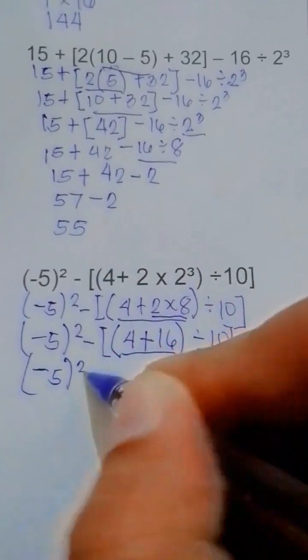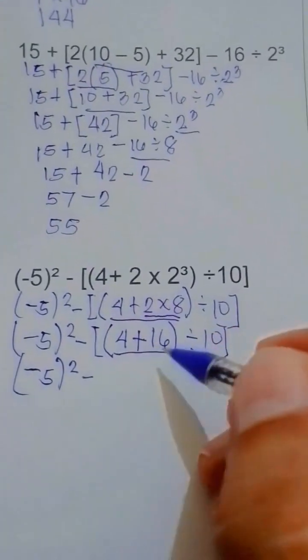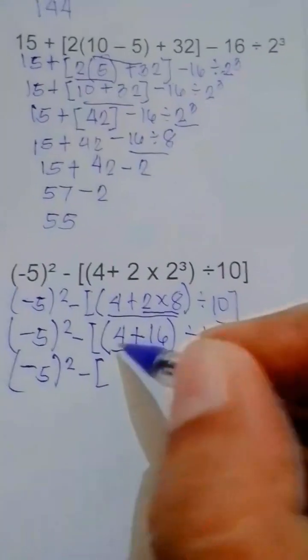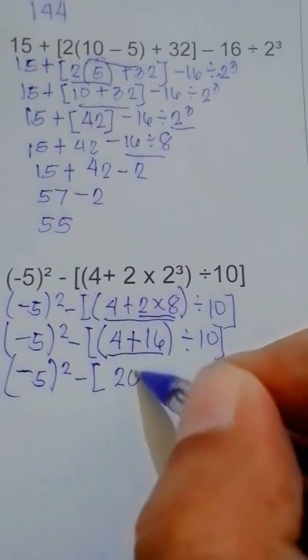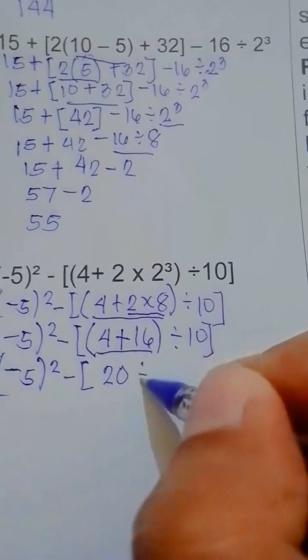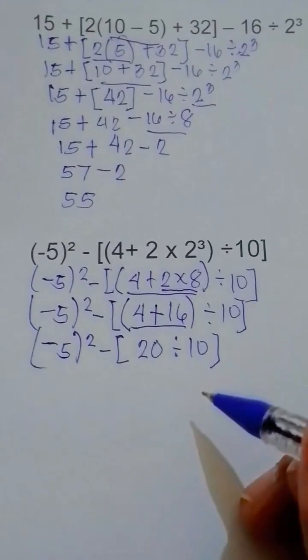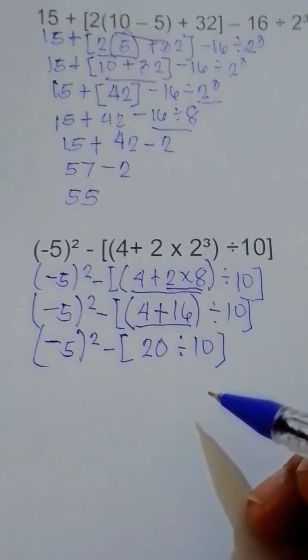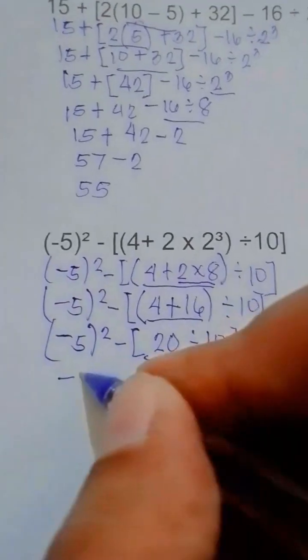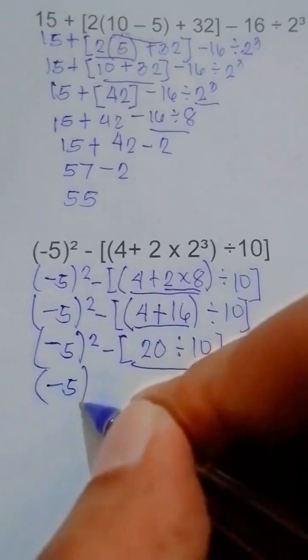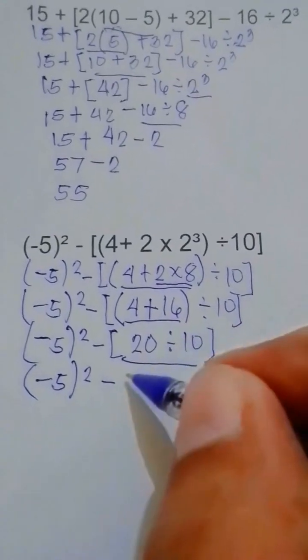Next one, the innermost groupings. Copy negative 5 to the second power minus bracket first. Then 4 plus, we have to do this one first. Parenthesis 4 plus 2 times 8 equals 16, then divided by 10, the bracket. Negative 5 raised to the second power minus 4 plus 16 equals 20, then divided by 10. Next step is the groupings. Negative 5 copy first, then minus 20 divided by 10 equals 2.